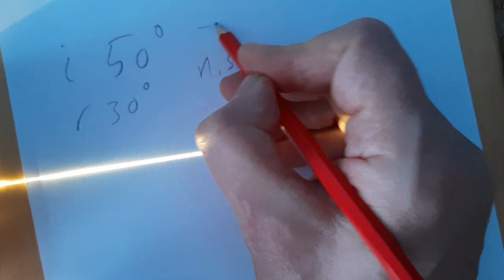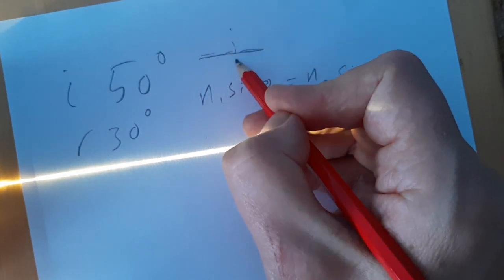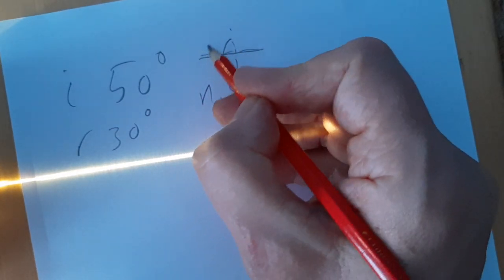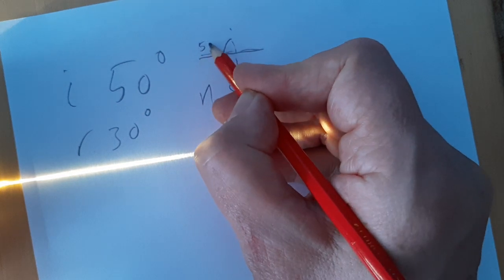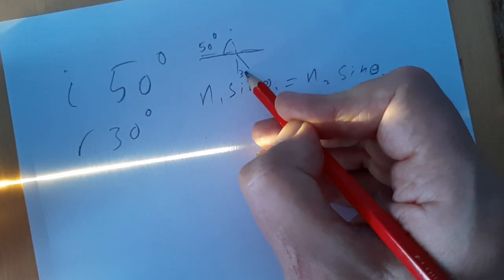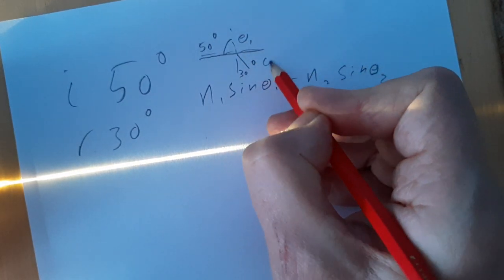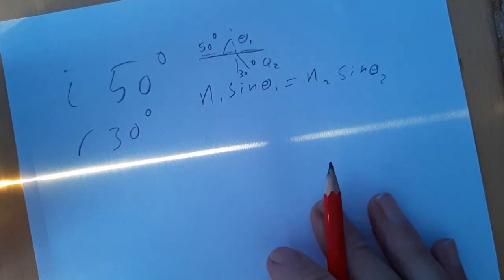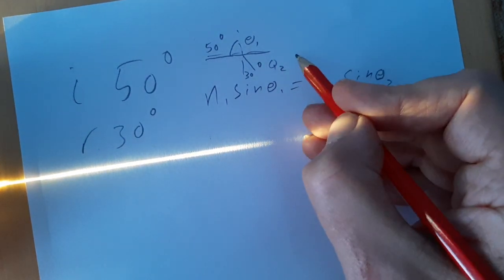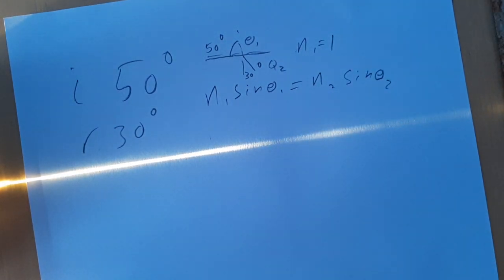And in this instance, we can say the angle of incidence was 50 degrees and the angle of refraction was 30 degrees. So, this is θ₁. This is θ₂. And I'll give you one more hint because I'm being nice at the moment. N₁ is equal to 1 because it came in through air.